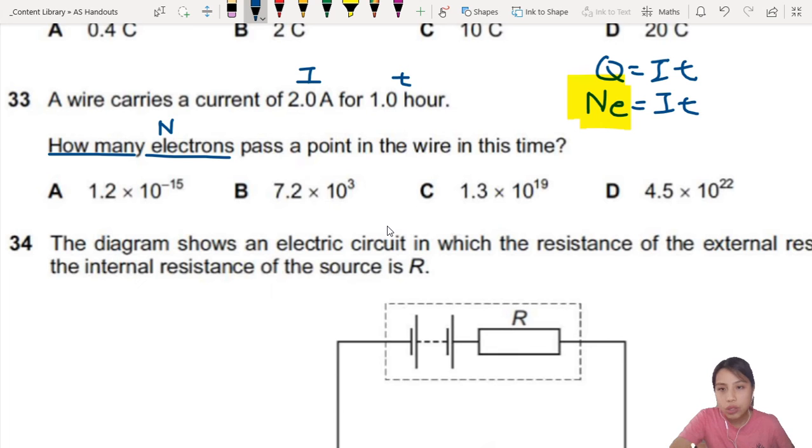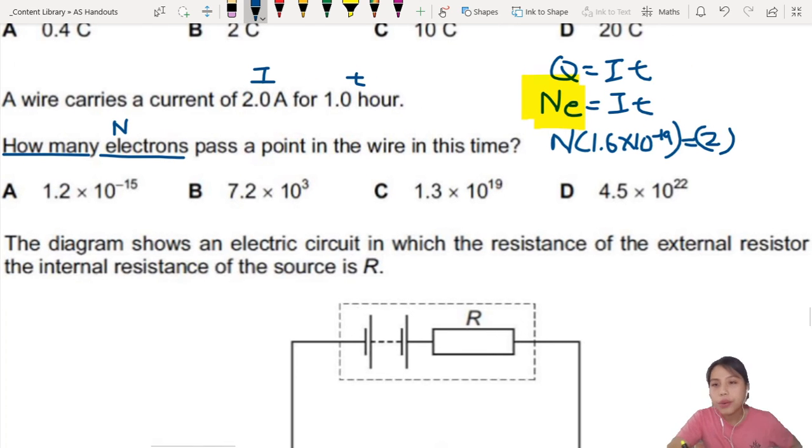Now we can calculate. So we have N. We're trying to find. E is 1.6 times 10 negative 19. I already tell us 2 amps. And time. Should I put one hour in? Hang on a second. These are all SI units. This one is not. We need to convert hour to seconds. So don't forget how to convert hour to seconds. We need to put 3600 seconds.